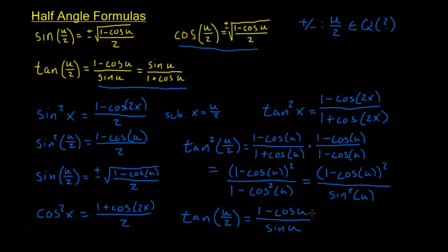Just so we don't have to worry about the missing plus or minus sign: 1 minus cosine u is always positive, 100% of the time. If cosine u is negative, we have 1 minus a negative number, which is positive. If cosine u is positive, it's always less than or equal to 1, so 1 minus it is still non-negative. If cosine u equals 1, we get 0 on the top, but sine u is also 0, giving us 0 over 0. In that case we use the other form: sine u over 1 plus cosine u, which gives 0 over 2, clearly just 0.